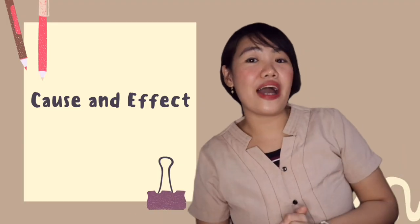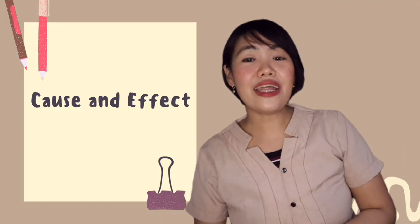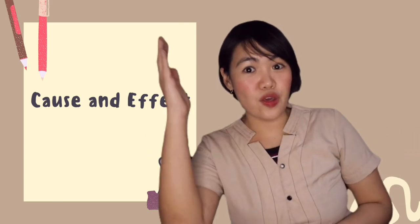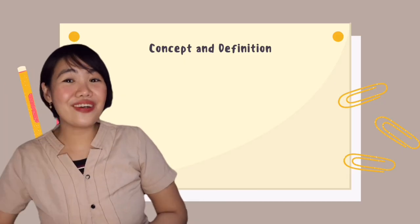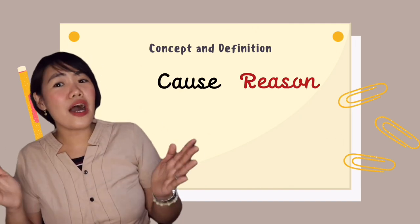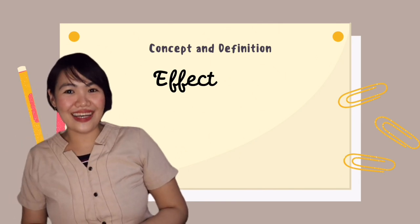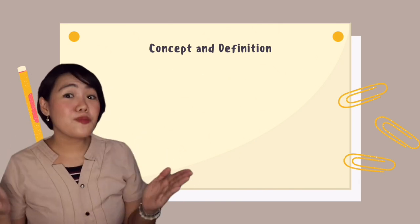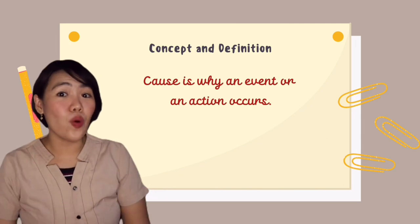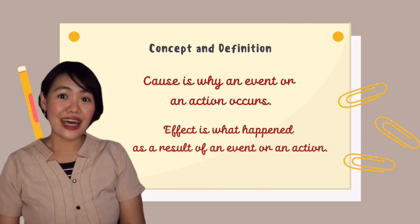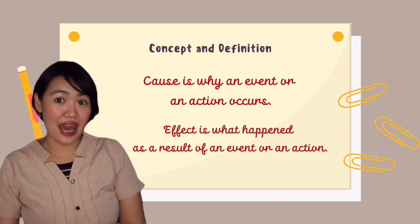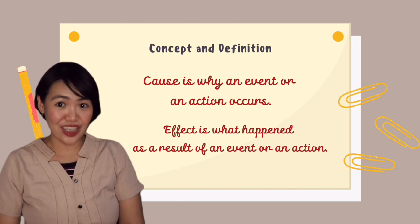During this lesson, I am going to model and help you identify cause and effect in reading a passage or text. Now let us define cause and effect. Cause is the reason — it is why an event or an action occurred. Effect is the result — what happened as a result of an event or an action.